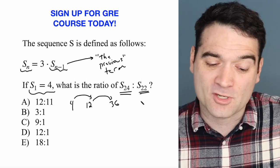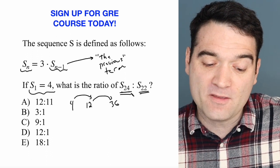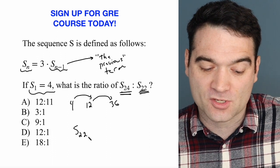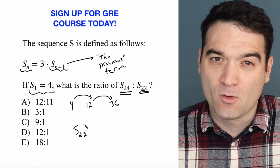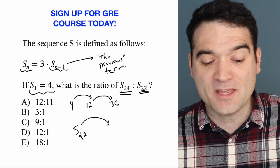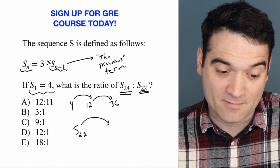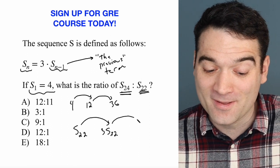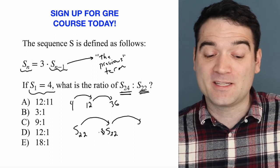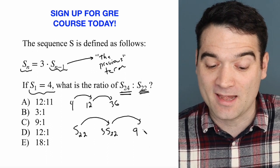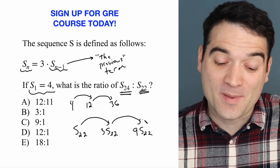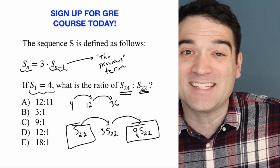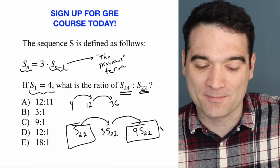So let's think about this more logically. The ratio of the 24th term to the 22nd term — let's call the 22nd term S sub 22. The 23rd term is going to be 3 times S sub 22. And the 24th term is going to be 3 times that, so 3 times 3 times S sub 22, or 9 times S sub 22. What's the ratio of this number to this number? It's 9 times bigger because it's 2 jumps away.